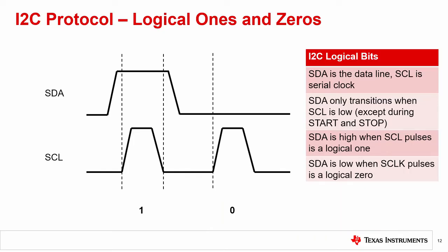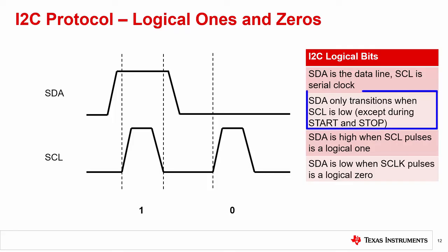I2C uses a sequence of ones and zeros for its serial communication. SDA is used for the data bits while SCL is the serial clock that times the bit sequence. A logical one is sent when the SDA releases the line, allowing the pull-up resistor to pull the line to a high level. A logical zero is sent when SDA pulls down on the line, setting a low level near ground. The ones and zeros are received when SCL is pulsed. For a valid bit, SDA does not change between a rising edge and the falling edge of SCL for that bit. If SDA changes between the rising and falling edges of the SCL, this may be interpreted as a start or stop condition on the I2C bus.